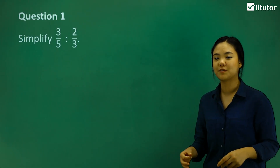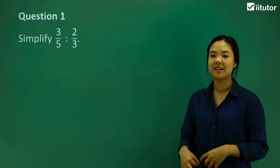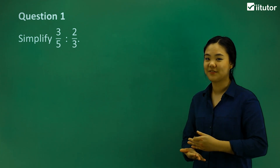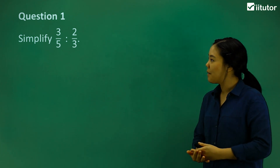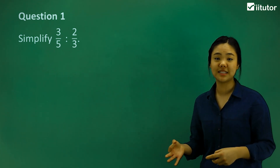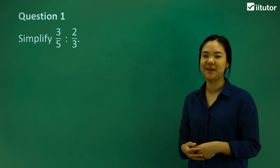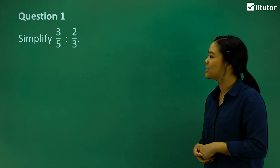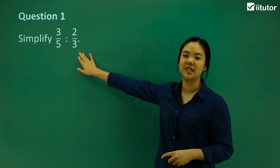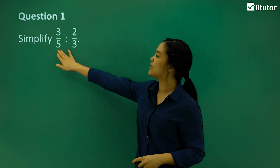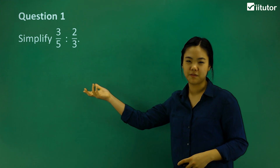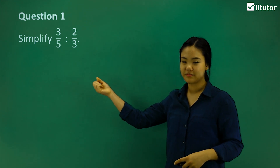So, simplifying ratios with fractions and decimals. I know that everyone hates fractions, but with practice you'll learn how to do them. So with question one, here we've got fractions in a ratio — we've got 3 fifths to 2 thirds, and we want to simplify that.